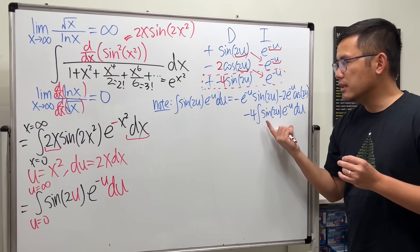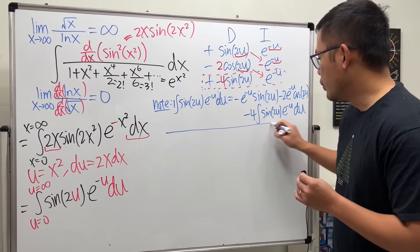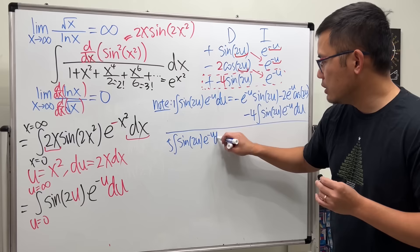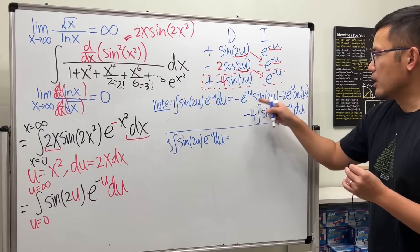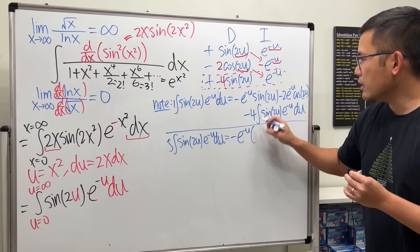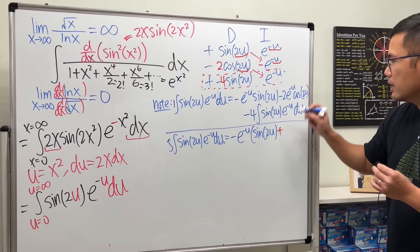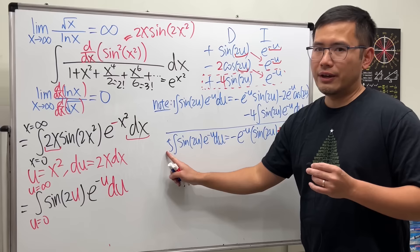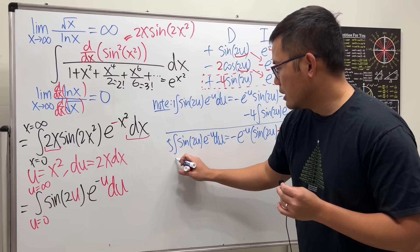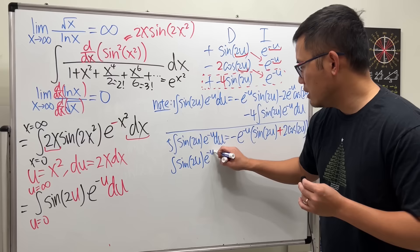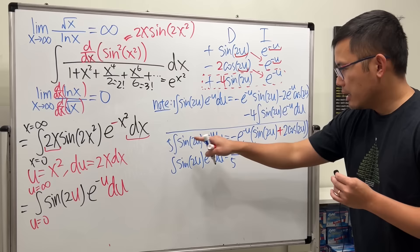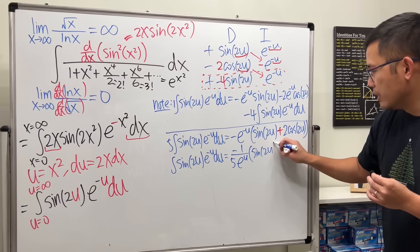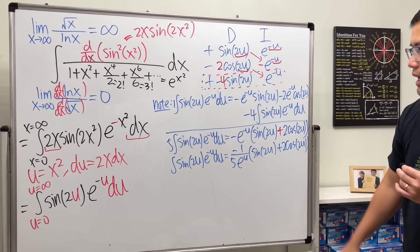One integral plus 4 gives 5 integrals total: 5 times the integral of sin(2u)·e^(−u) du equals that expression. Factoring out −e^(−u) we get −e^(−u)·(sin(2u) + 2cos(2u)), and dividing by 5, the integral equals −(1/5)·(sin(2u) + 2cos(2u))/e^u.